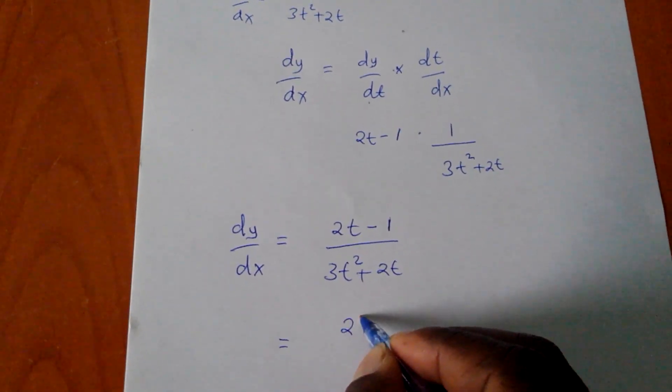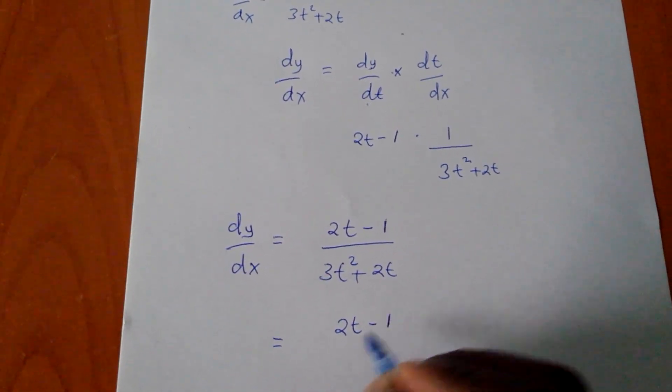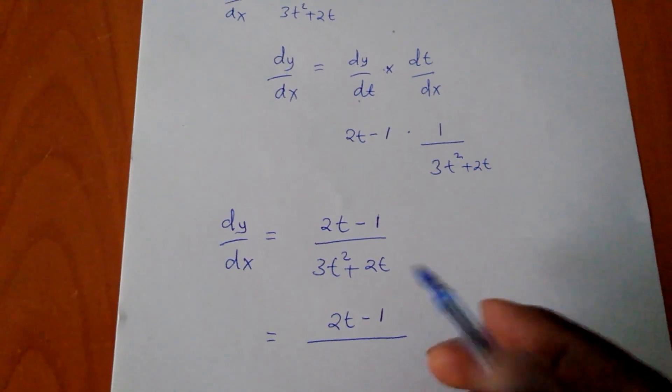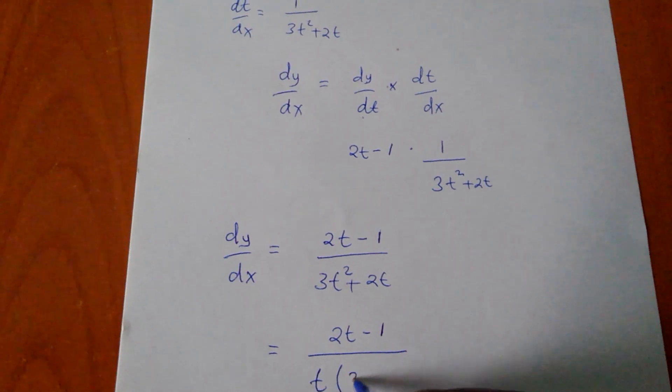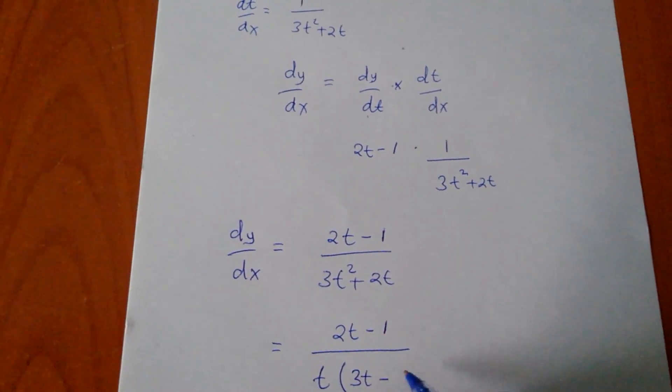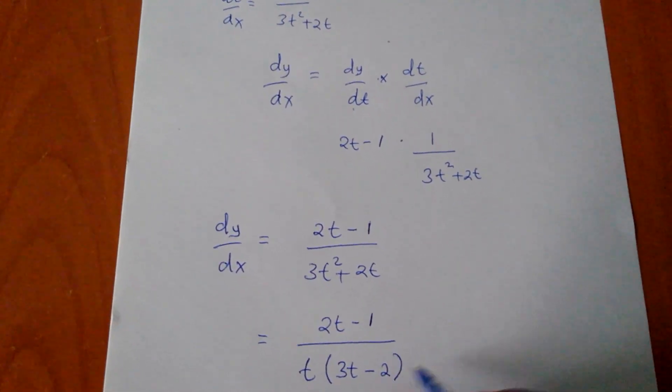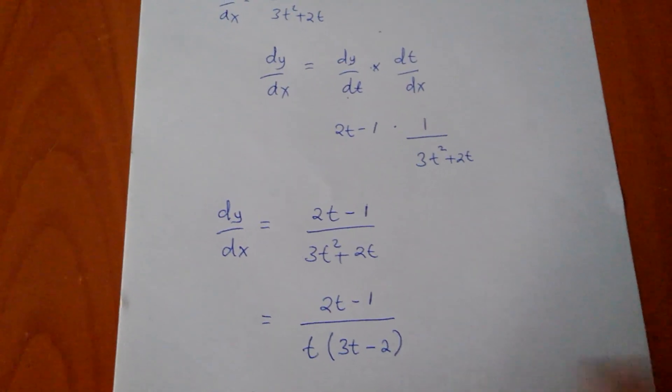So I'll have my 2t minus 1 over, I have a common factor which is t. So I'll make it to go out. I'll remain with 3t plus 2. So this is my dy/dx.